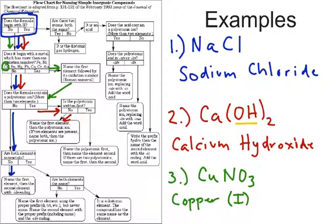We're going to go to the next question now. Does the formula contain a polyatomic ion? Yes, it does. Is the polyatomic ion written first? No. Name the first element, we've already done that, then the polyatomic ion. And NO3 is called nitrate.